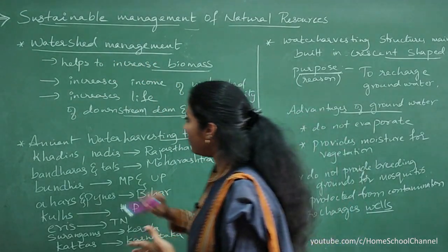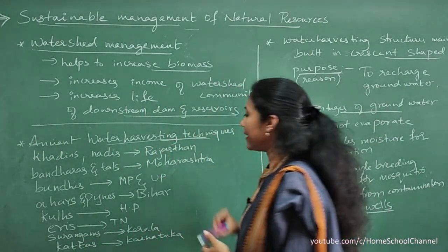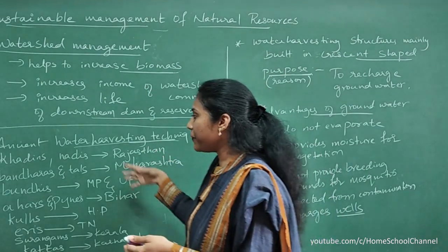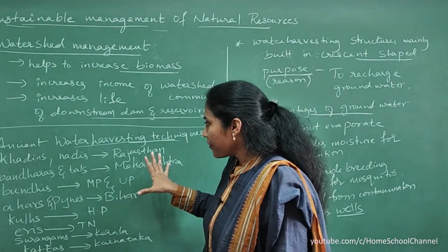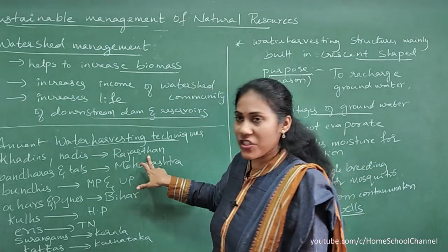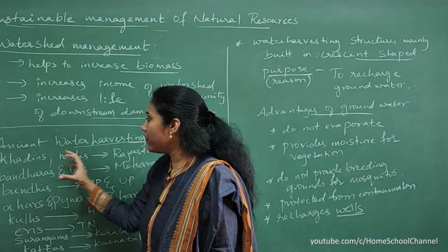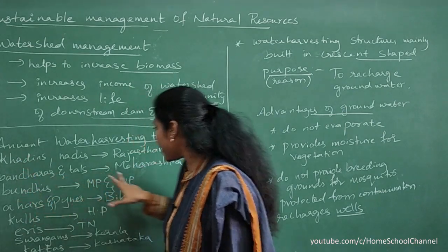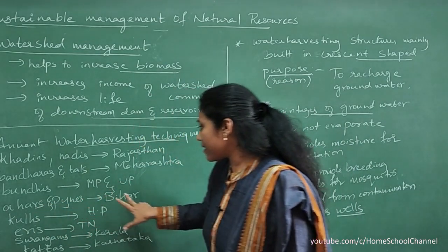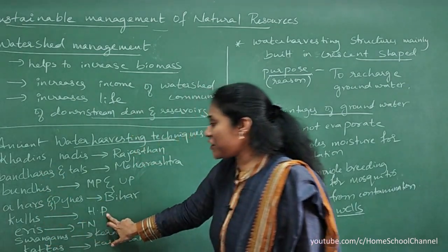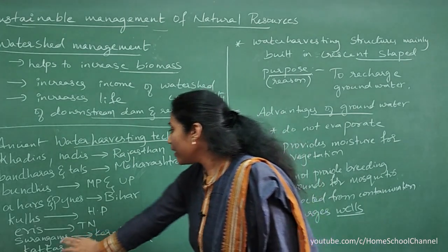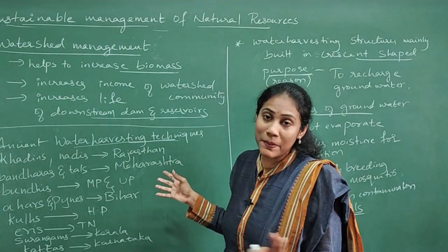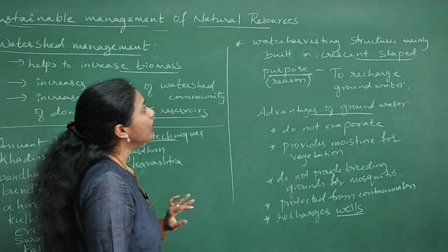Different water harvesting techniques have been used across states with different names. In Rajasthan they are called Khadins and Nadis; in Maharashtra, Bandavas and Thals; in Madhya Pradesh and Uttar Pradesh, Bandis; in Bihar, Ahars and Pynes; in Himachal Pradesh, Khuls; in Tamil Nadu, Eris; in Kerala, Surangams; and in Karnataka, Kattas.